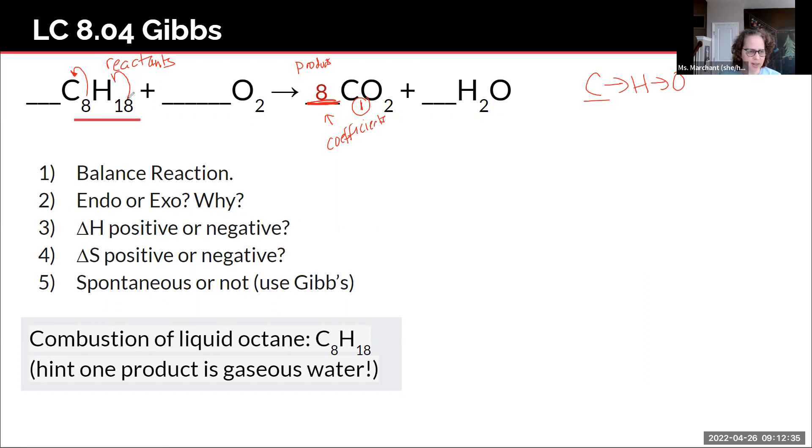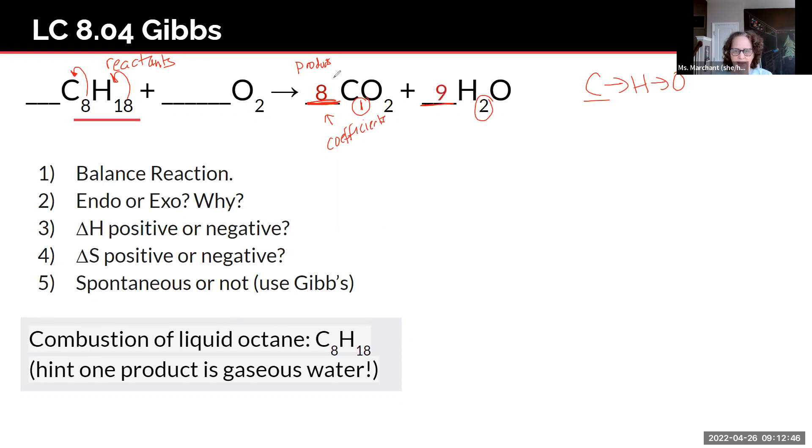Hydrogens, we have 18 on the reactant side. On the product side, we have two, but we need 18. What times two is 18? Nine times two is 18. Now we have balanced the hydrogens.